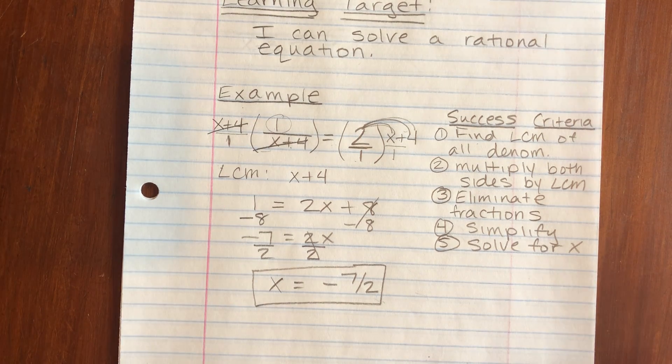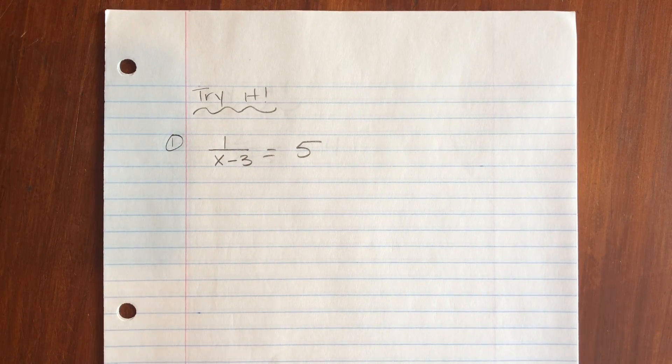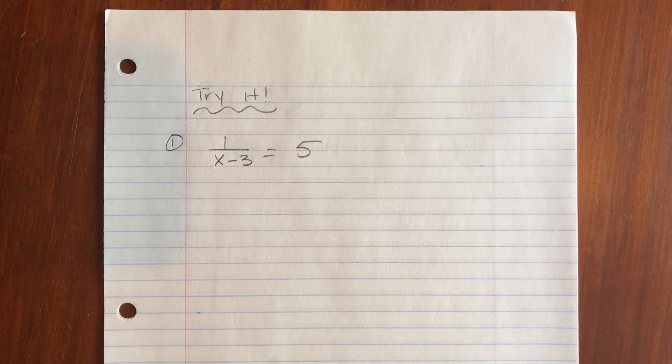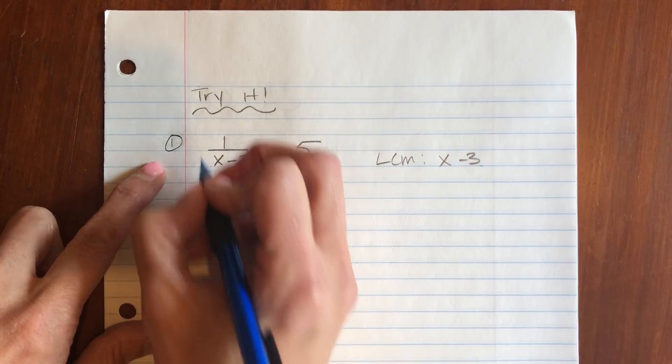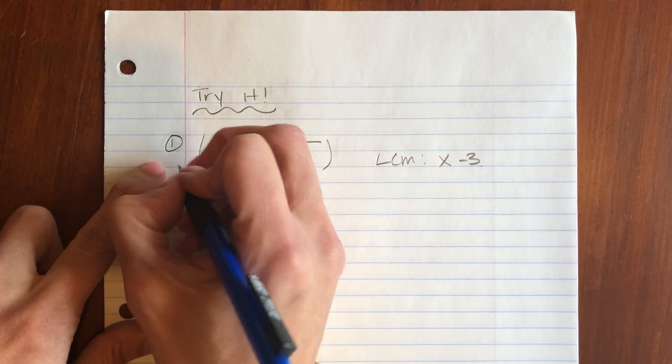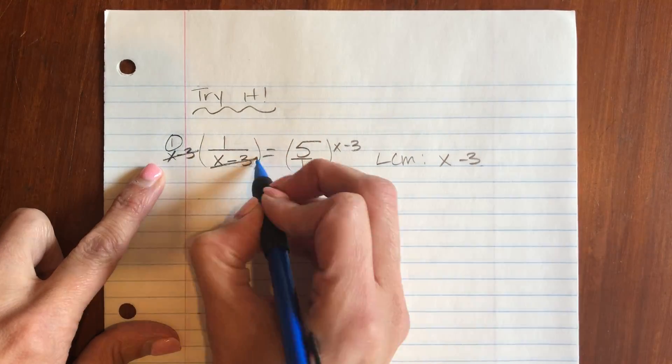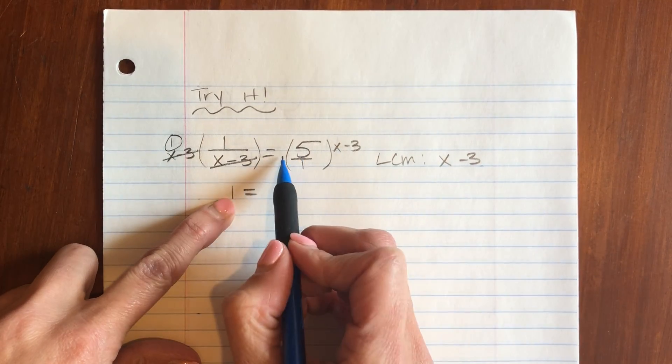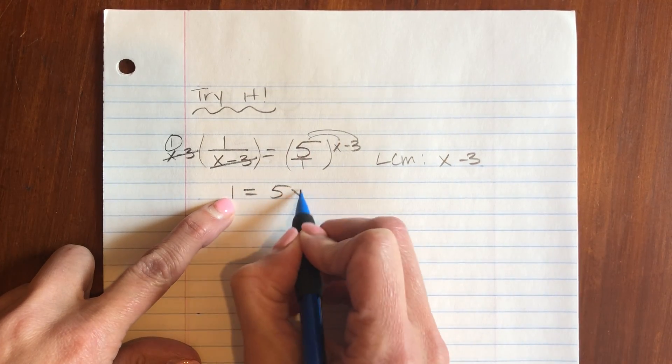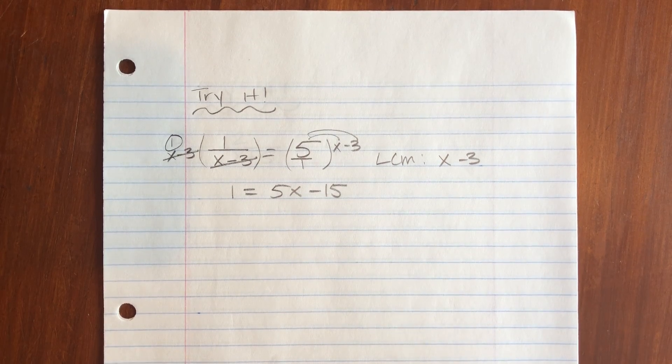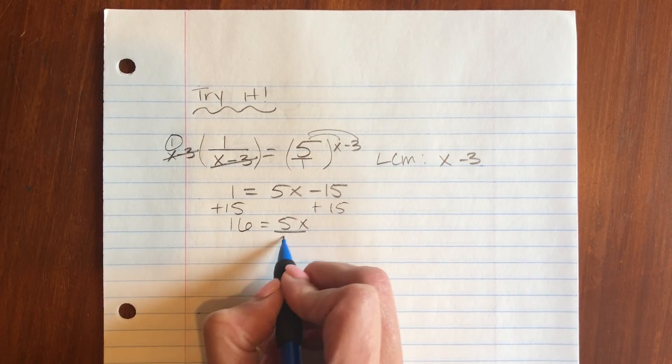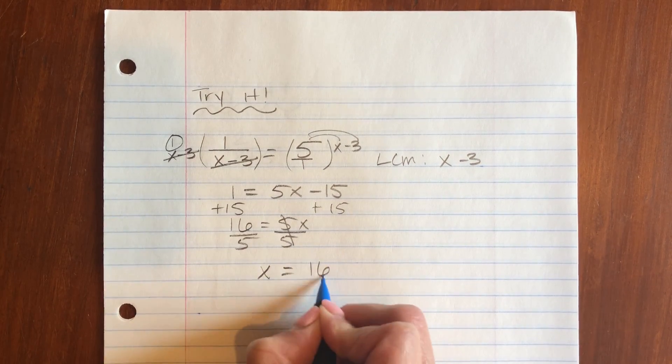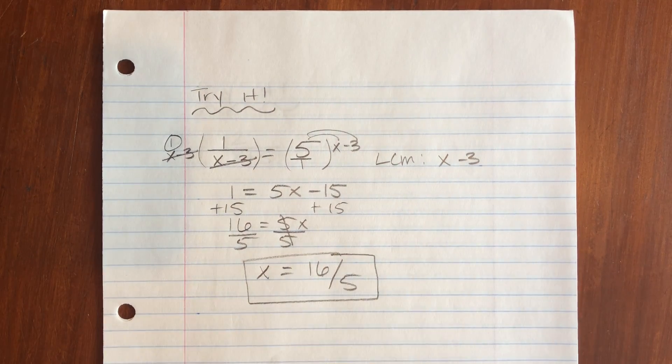I have a few for you to try on your own. Here's the first one. Go ahead and try that one. Okay, let's go over it. Your LCM for this one would be x minus 3. Multiply both sides by x minus 3. These cancel out, so I'm left with 1. Then distribute that 5: 5x minus 15. Now it's just a two-step equation. Add the 15 and divide by 5. So x equals 16 over 5.